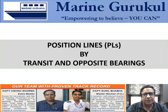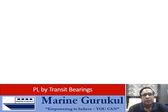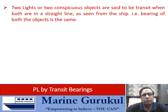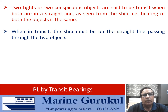Welcome to Marine Gurukul video series. This video is on obtaining and plotting of position lines by transit and opposite bearings. PL by transit bearing: two lights or two conspicuous objects are said to be in transit when both are in a straight line as viewed from the ship or observer — that is, the bearing of both objects is the same to the observer. When in transit, the ship has to be on a straight line passing through those two conspicuous points or objects.